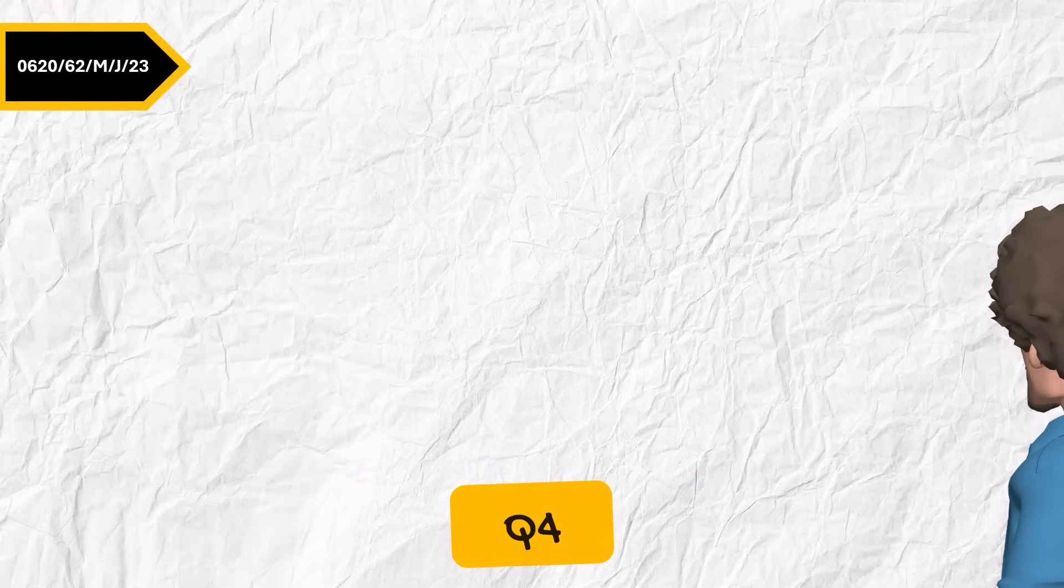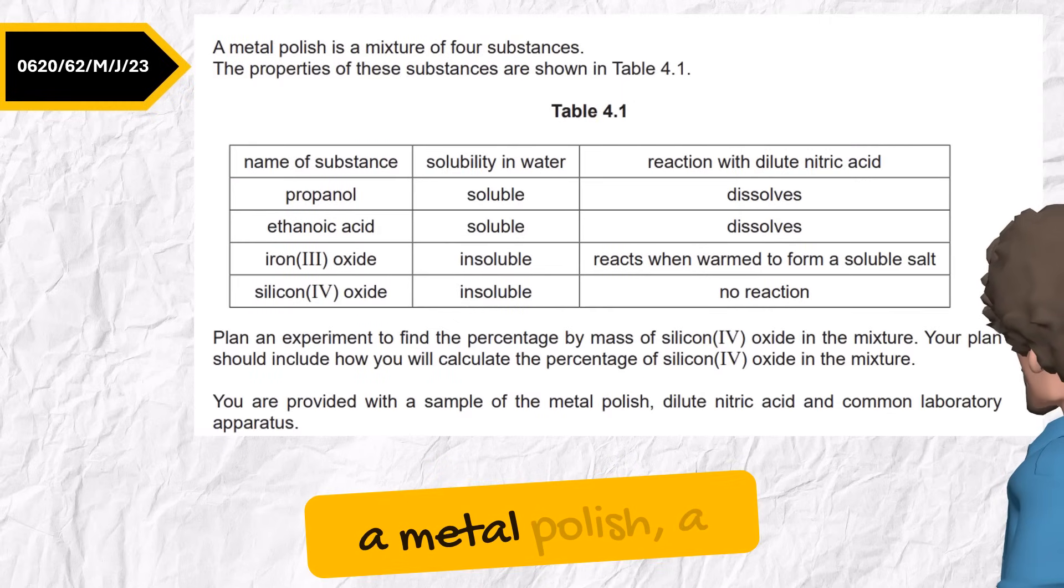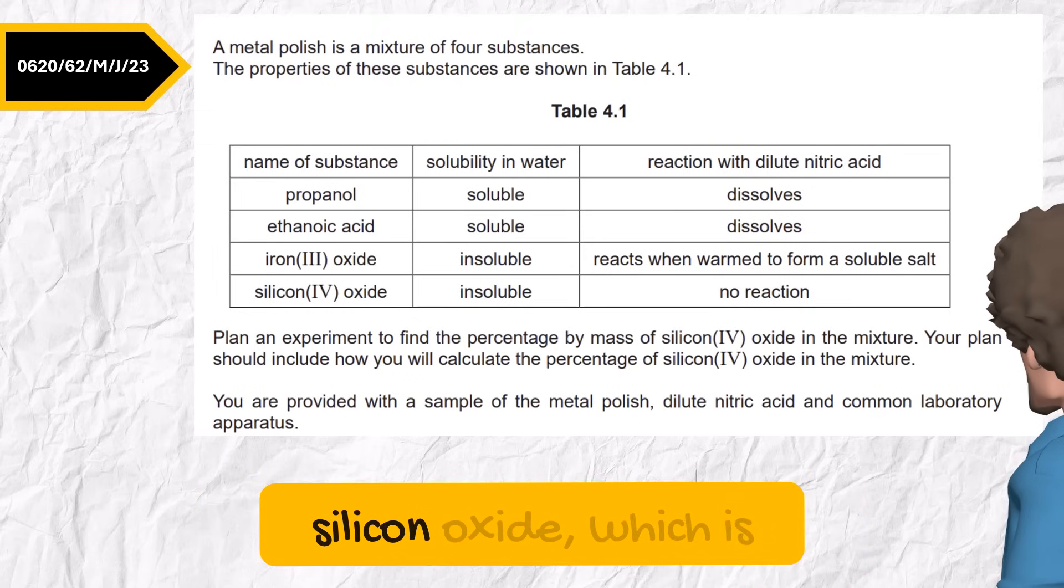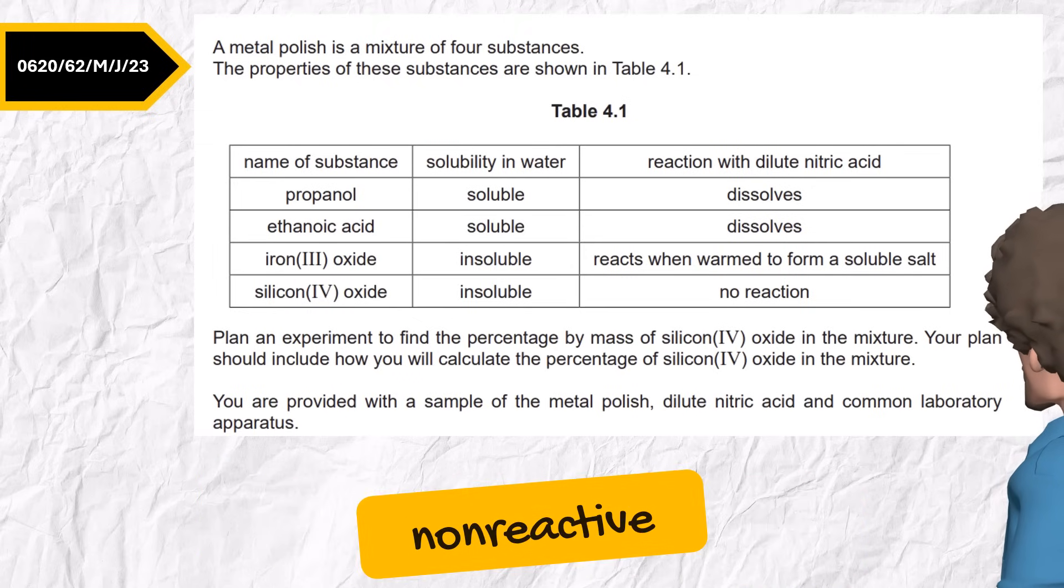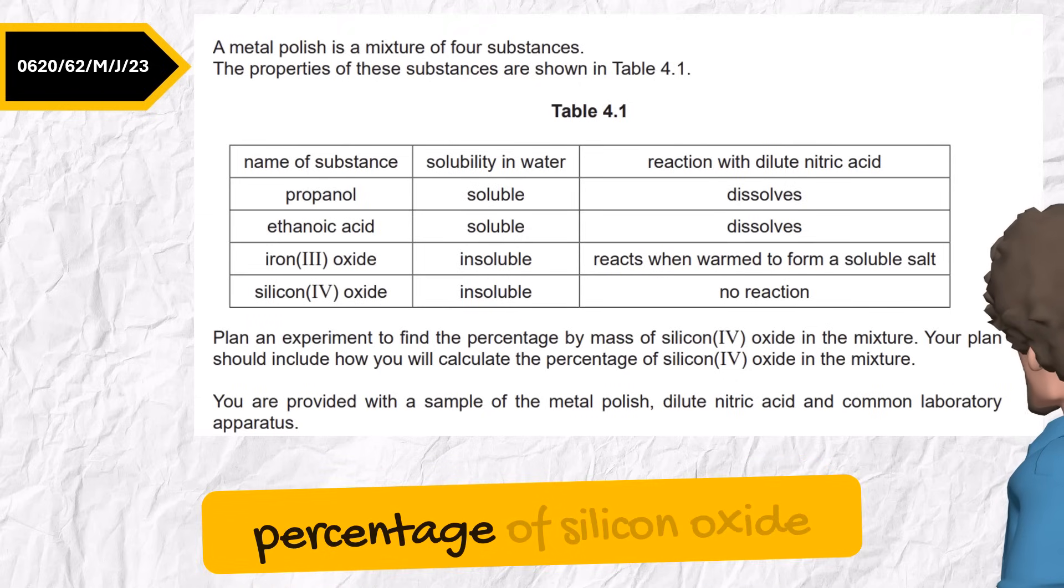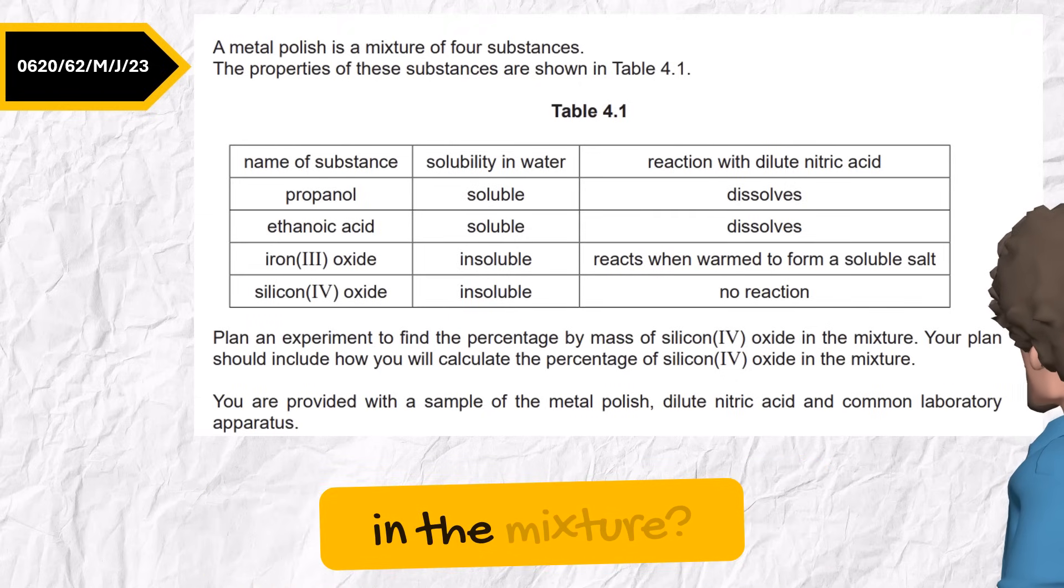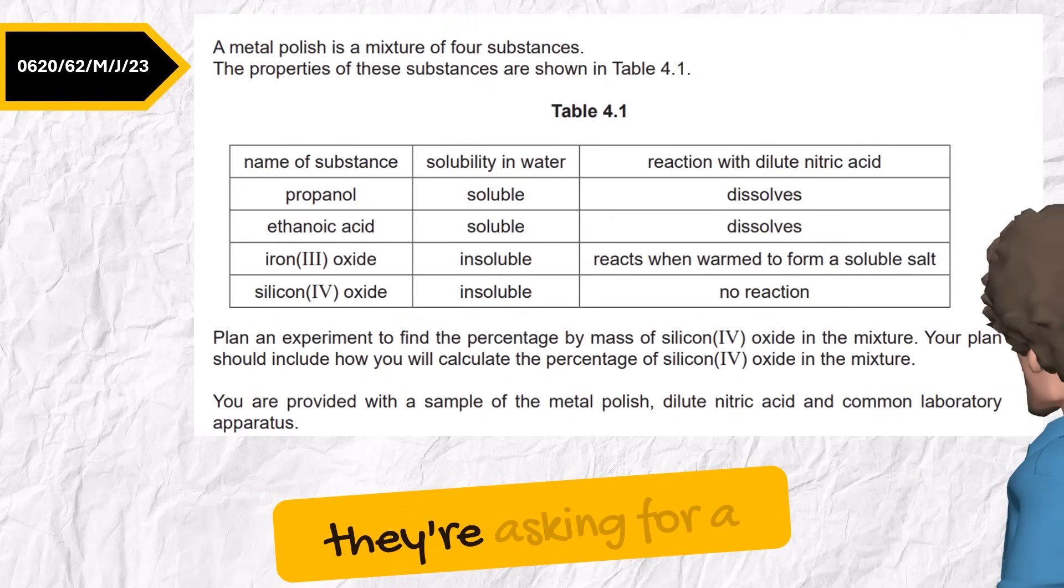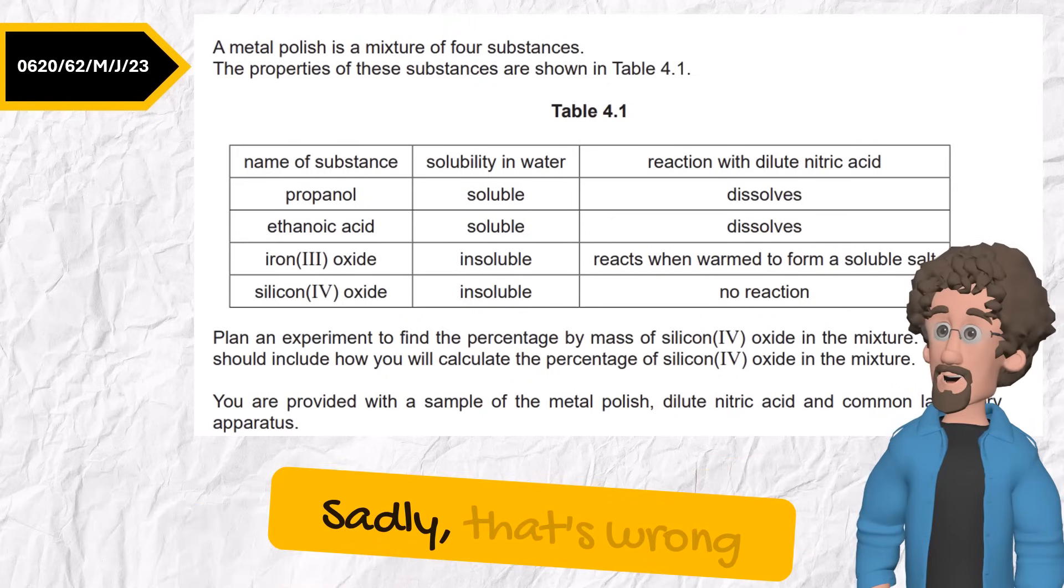June 2023, variant 2, question 4. This one is about a metal polish, a mixture of four substances. One of them is silicon 4 oxide, which is non-reactive. The question asks, how would you calculate the percentage of silicon 4 oxide in the mixture? You might think this is quantitative analysis because they're asking for a percentage. Sadly, that's wrong.